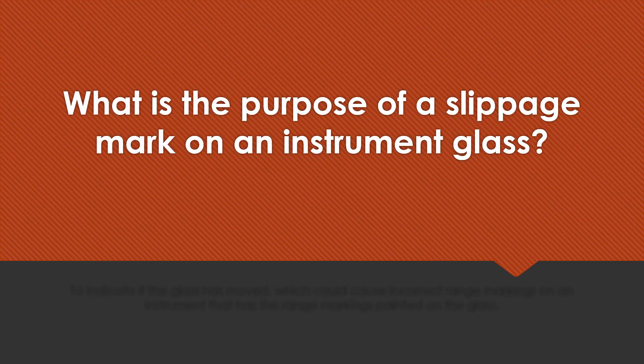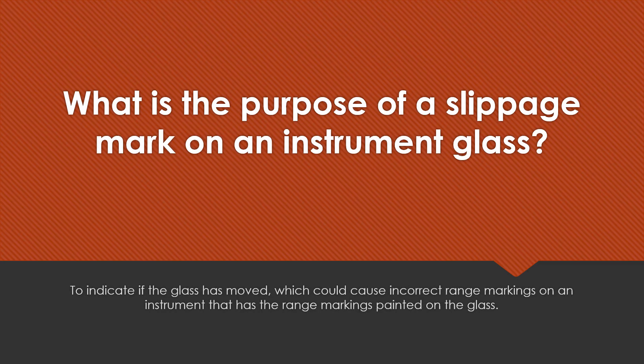What is the purpose of a slippage mark on an instrument glass? To indicate if the glass has moved, which could cause incorrect range markings on an instrument that has the range markings painted on the glass.